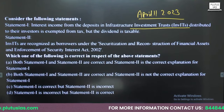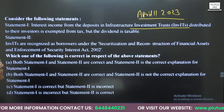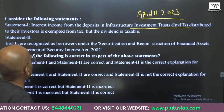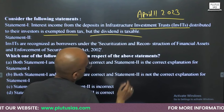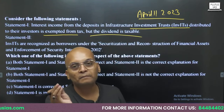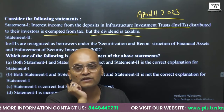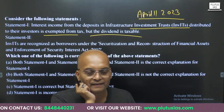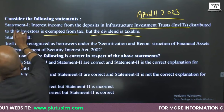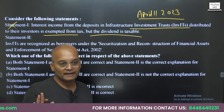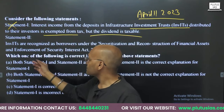Statement one says interest income from deposits in infrastructure investment trusts, distributed to InvIT investors, is exempted from tax, but dividend is taxable. However, recently the government made interest income taxable as well — this was in the news around 30 to 40 days back. So interest is now taxable, which means Statement one is wrong — it incorrectly says interest is exempted.